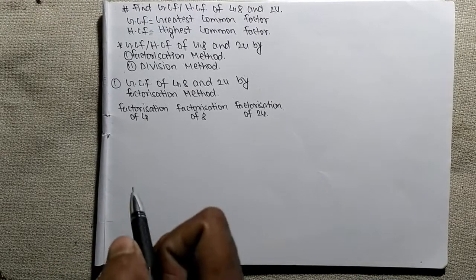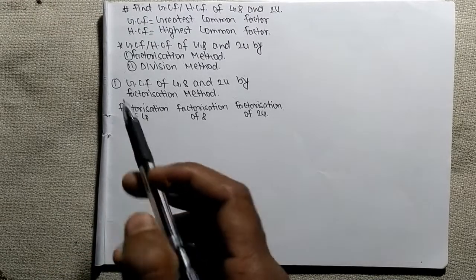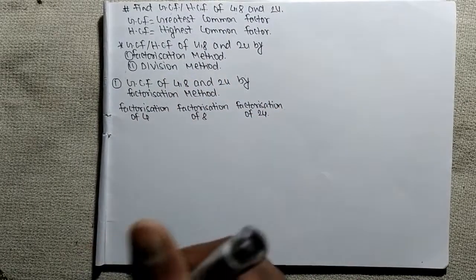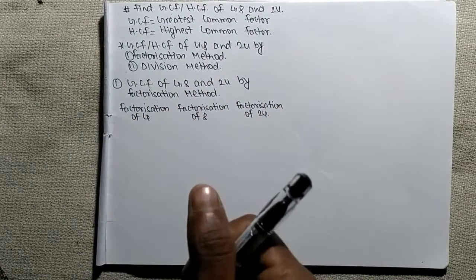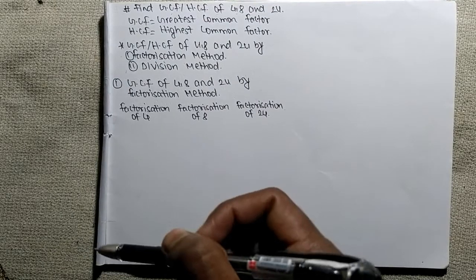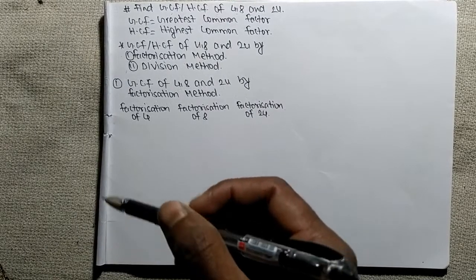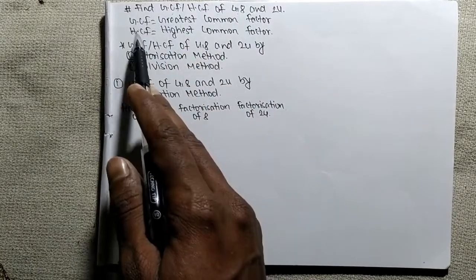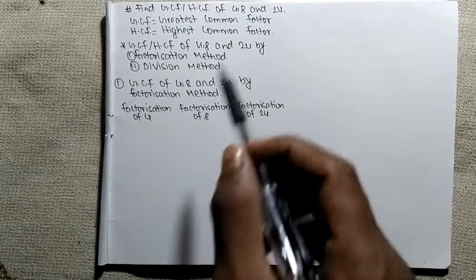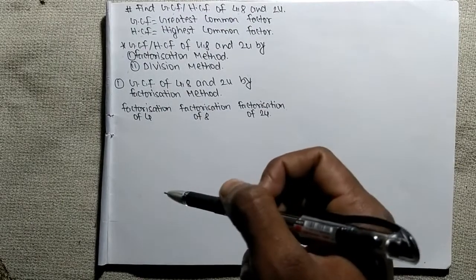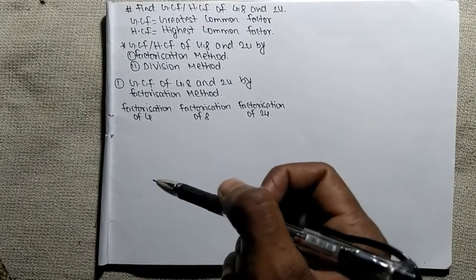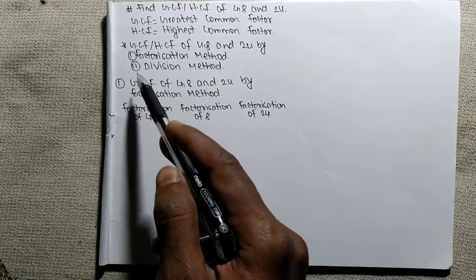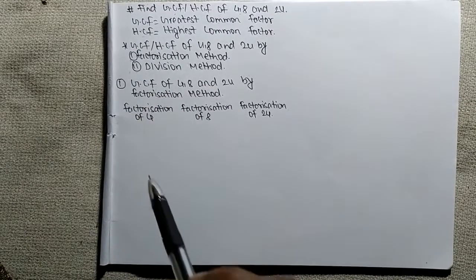Today in this video we shall learn how to find GCF or HCF of 4, 8 and 24. Before finding GCF, we should know what GCF or HCF stands for. GCF stands for greatest common factor and HCF stands for highest common factor. We shall learn to find GCF or HCF by two methods: first by factorization method and second by division method.